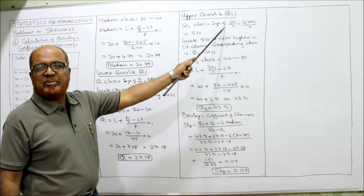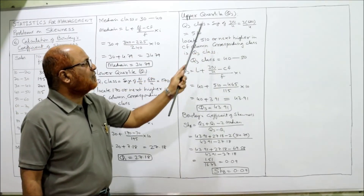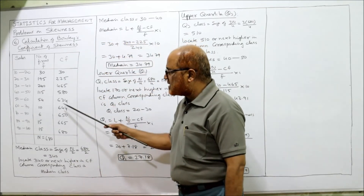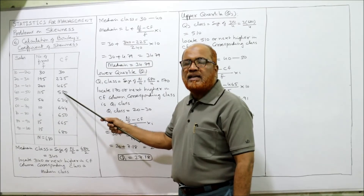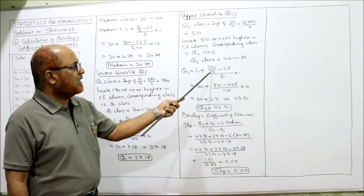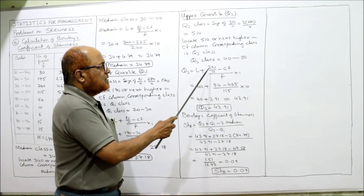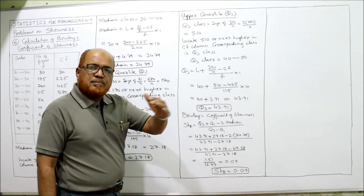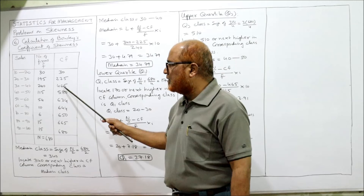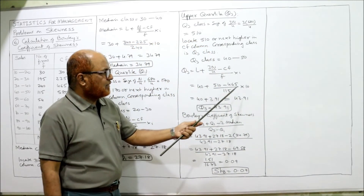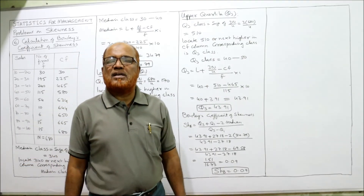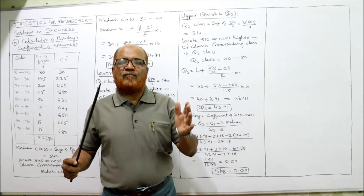For Q3: 3n/4 = 3×680/4 = 510. Locate 510 or next higher in the CF column; 580 is the next higher, corresponding to class 40 to 50. Q3 = 40 + [(510 − 465) / 115] × 10. Simplifying: 45/115 × 10 = 3.91. So Q3 = 43.91.